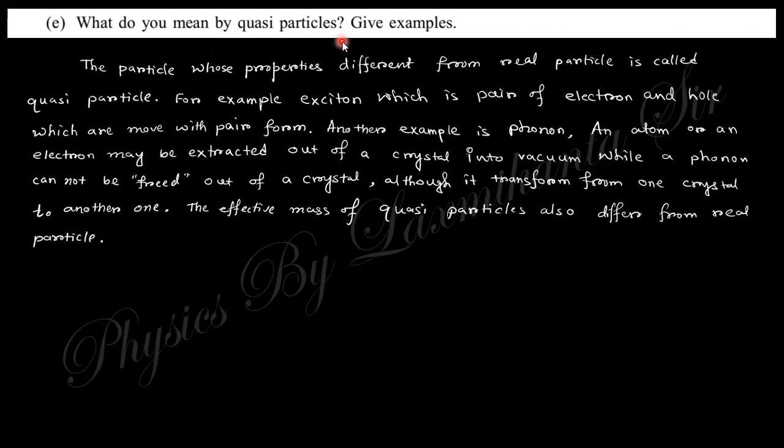Next: What do you mean by quasi particles? Give examples. The particle whose properties differ from real particle is called quasi particle. For example, exciton, which is a pair of electron and hole. When a hole and electron are generated, generally they are separate, but sometimes they are paired. When they move together, this is called a quasi particle whose property like effective mass differs from real particles.